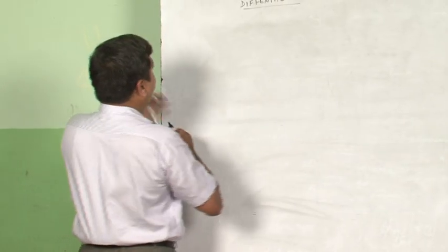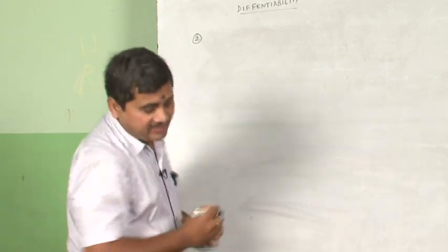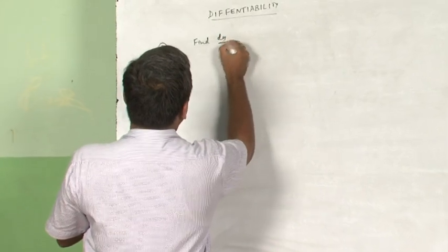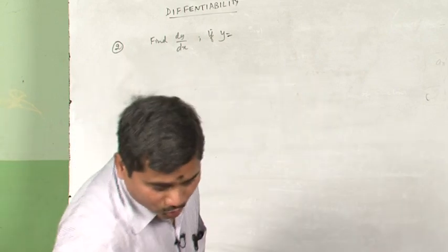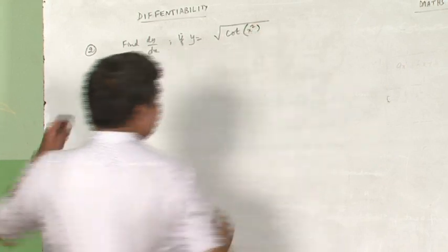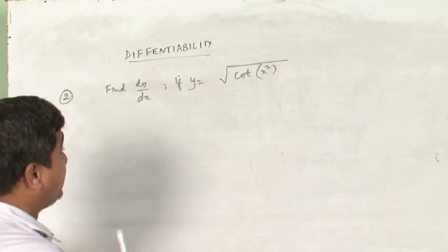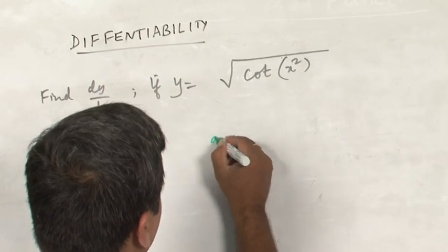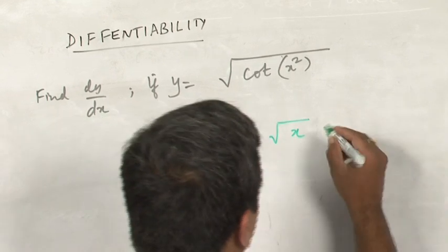Now I will take one more problem under the same topic. Find dy/dx if y = √(cot(x²)). This is an interesting problem because here there are altogether three functions involved.